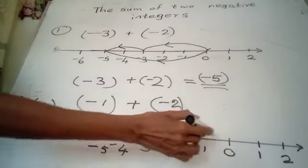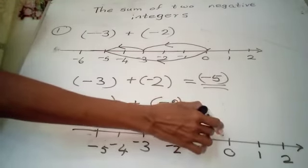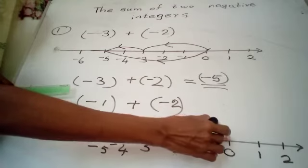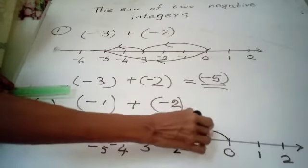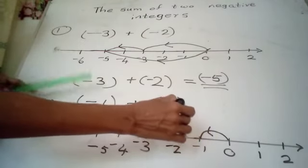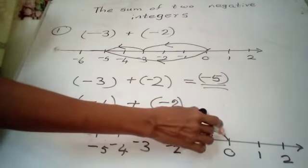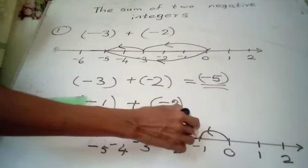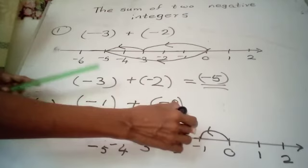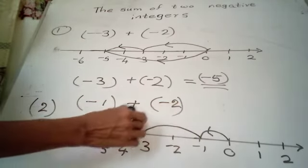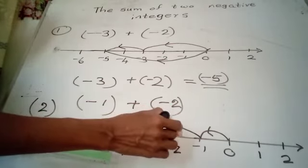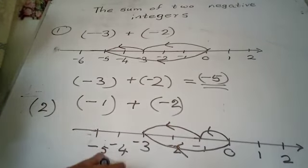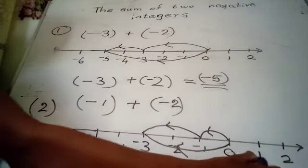Starting from 0, let's go 1 unit towards the left — here is negative 1. Next, from this point, let's go another 2 units towards the left along the number line. The directed number denoted by the position at which we finally stopped is the answer. The answer is negative 3. Negative 1 plus negative 2 equals negative 3.